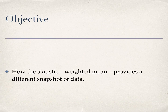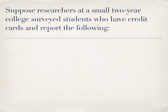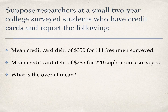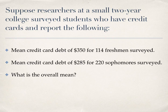The objective is how the statistic weighted mean provides a different snapshot of data. Suppose researchers at a small two-year college surveyed students who have credit cards and report the following: the mean credit card debt of $350 for 114 freshmen surveyed, and a mean credit card debt of $285 for 220 sophomores surveyed. What is the overall mean? What is the mean of these means?